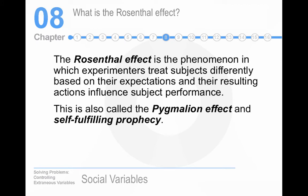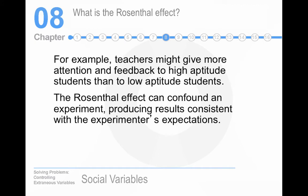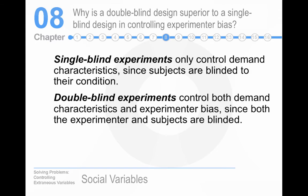The Rosenthal effect is when experimenters treat people differently based on their expectations. Named for Robert Rosenthal, he found this worked both in the lab with rats and in the classroom with teachers. Teachers told that a student would be an intellectual bloomer were friendlier to those students, called on them more, gave them more difficult material and better feedback — and of course those students did better because of that.